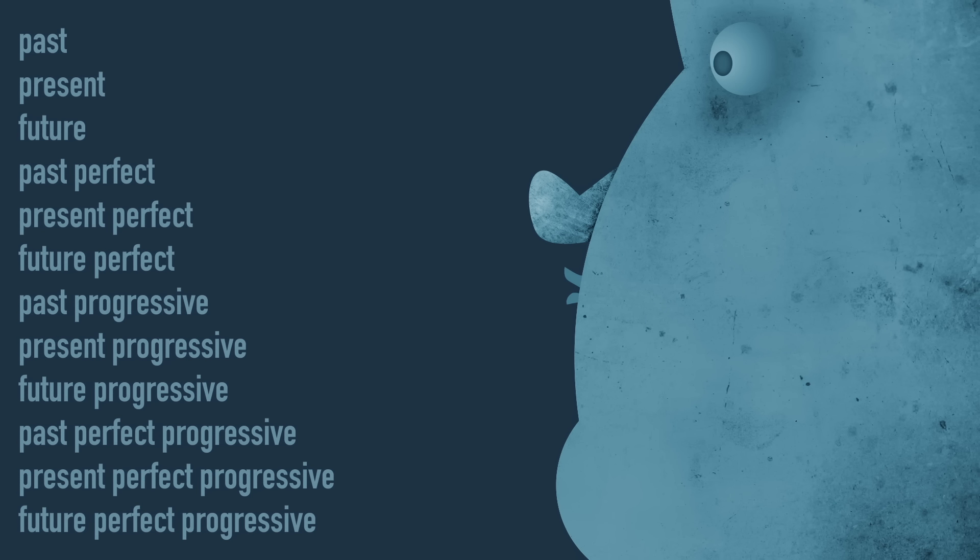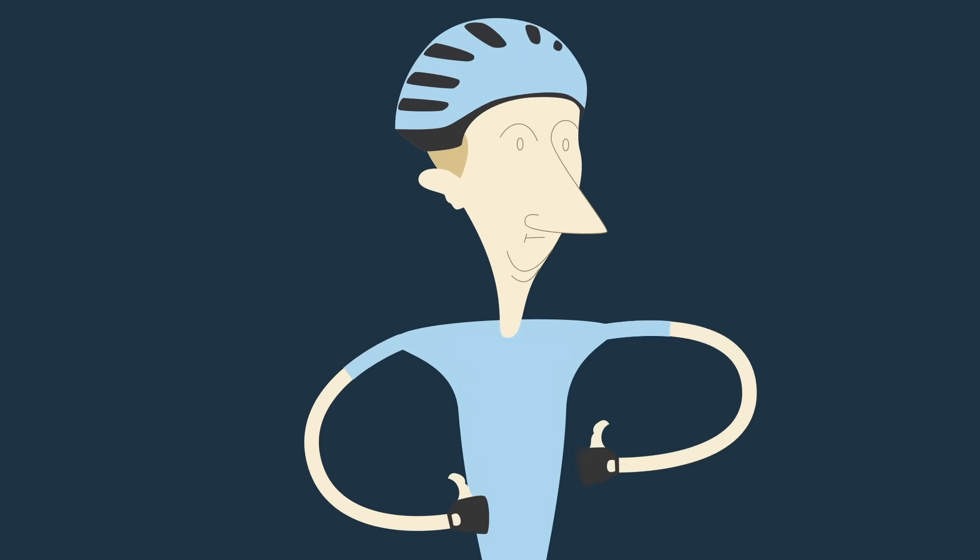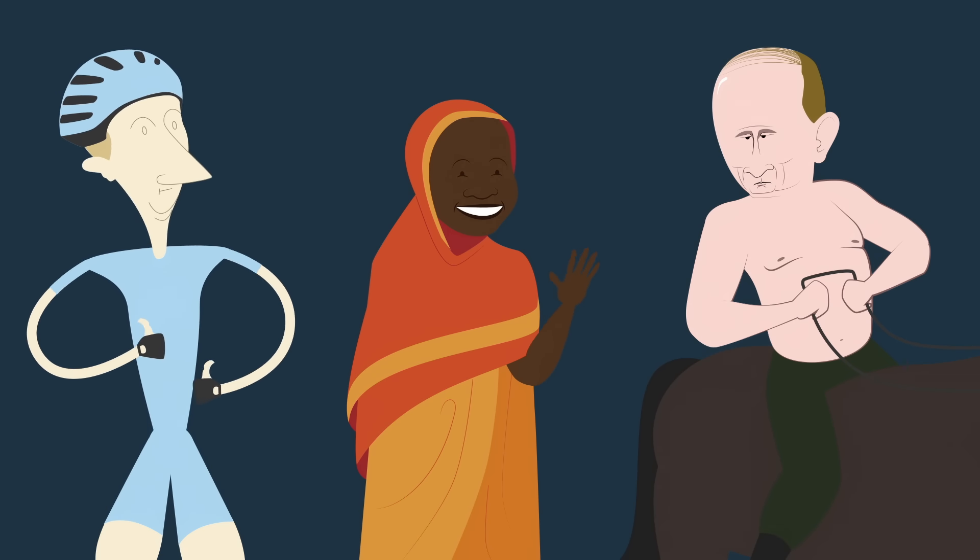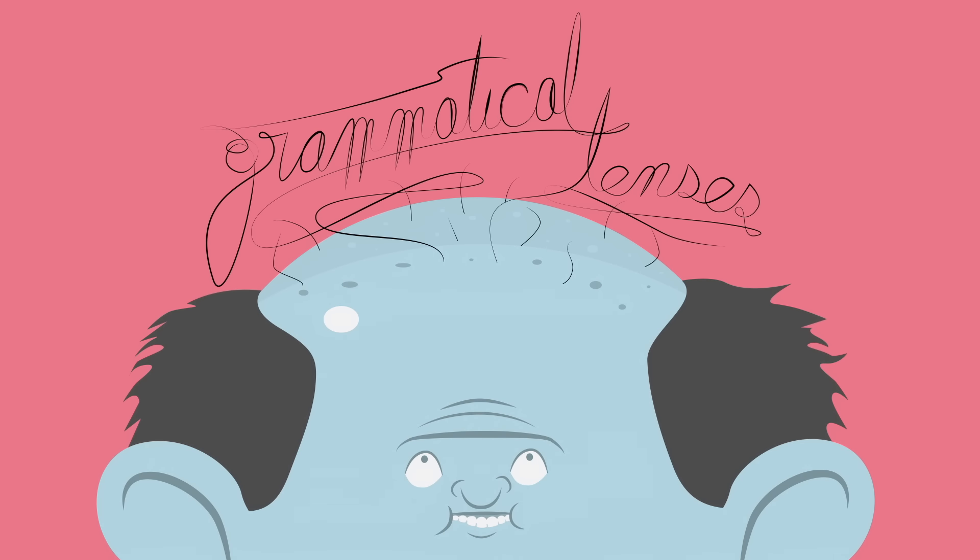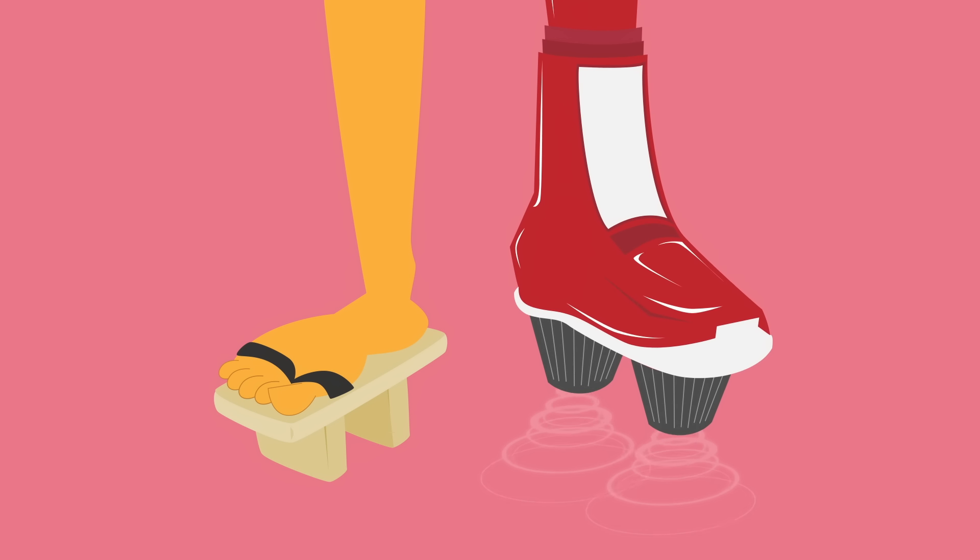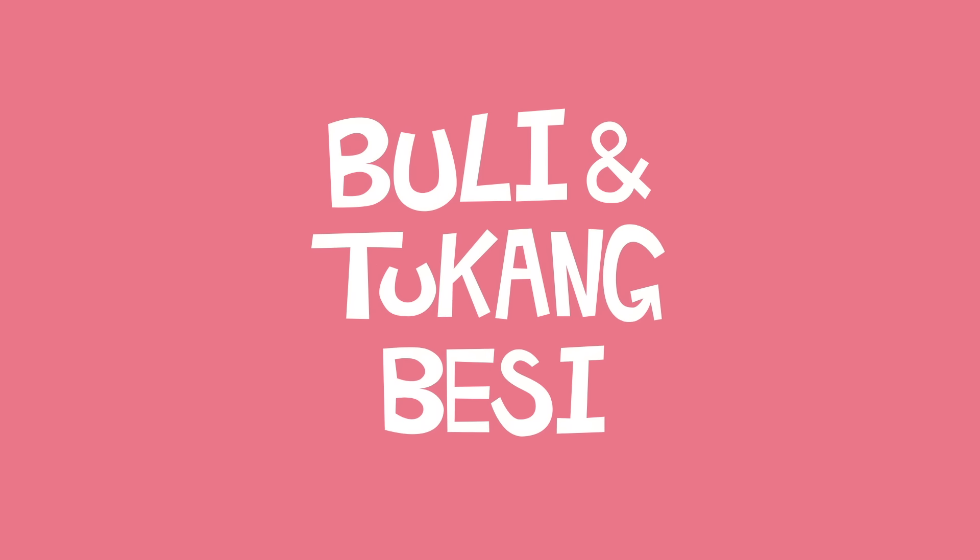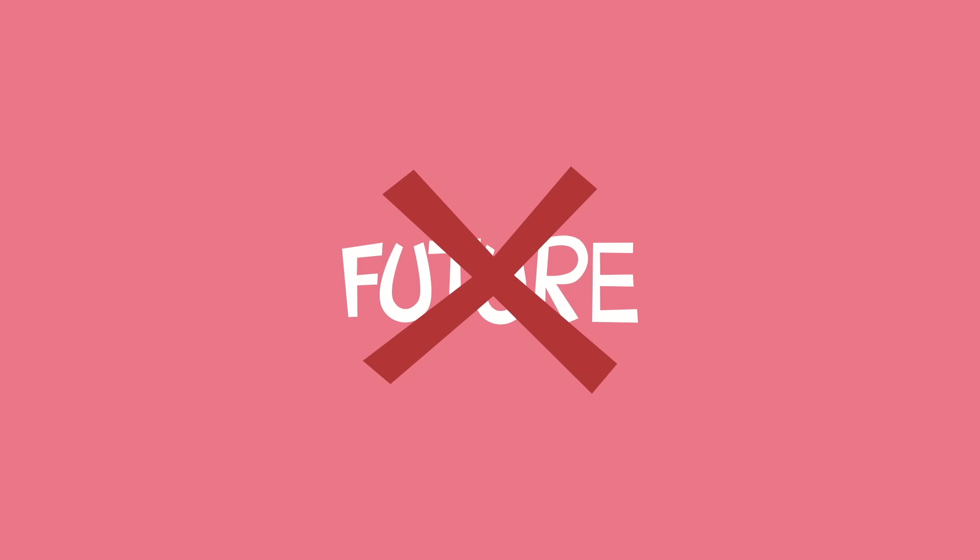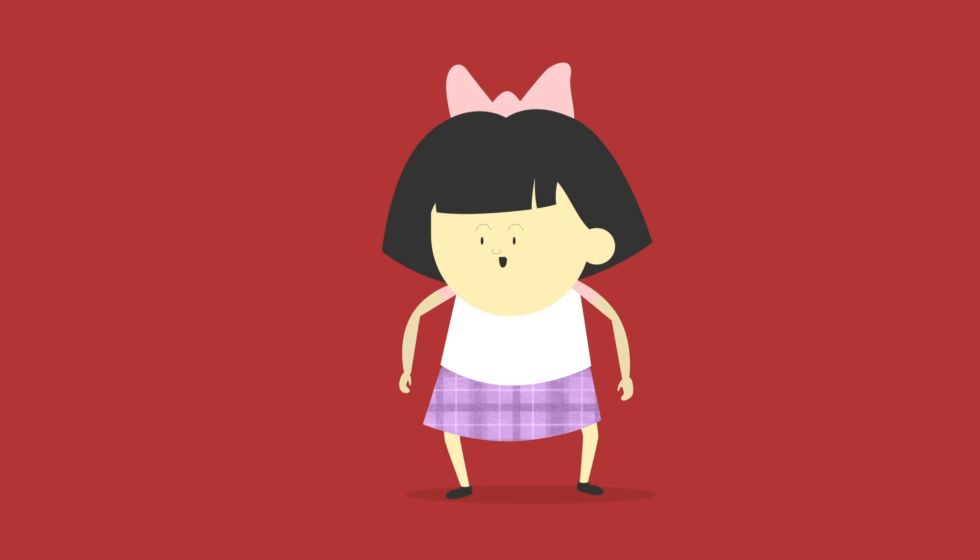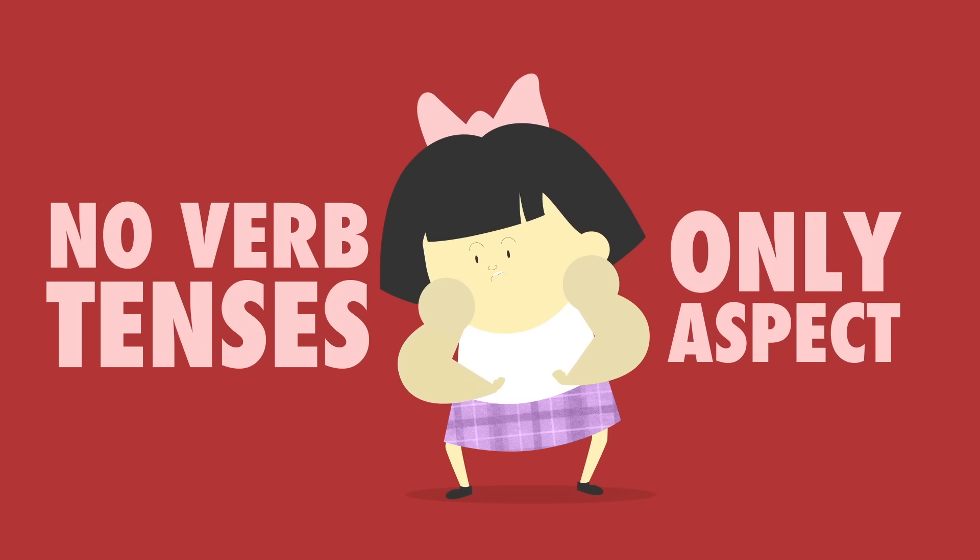What about other languages? Some, like French, Swahili, and Russian, take a similar approach to English. Others describe and divide time differently. Some have fewer grammatical tenses, like Japanese, which only distinguishes past from non-past, and Mandarin Chinese, with no verb tenses at all, only aspect.